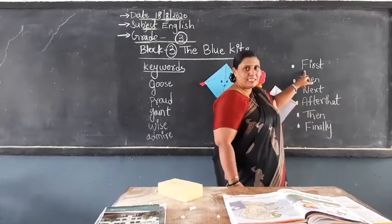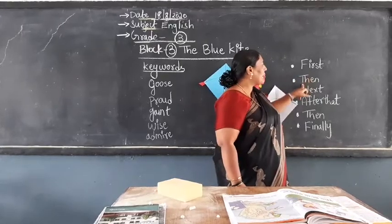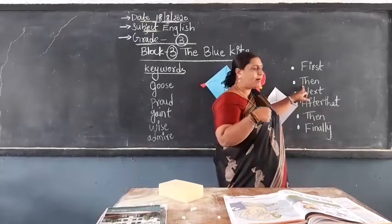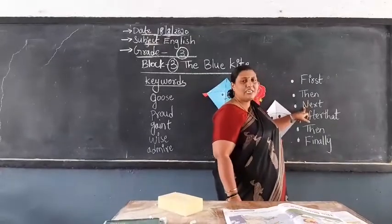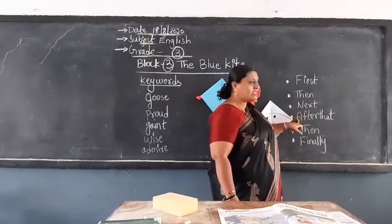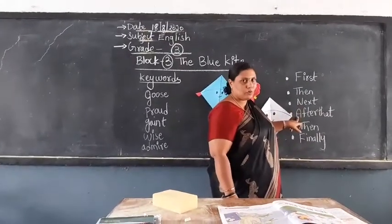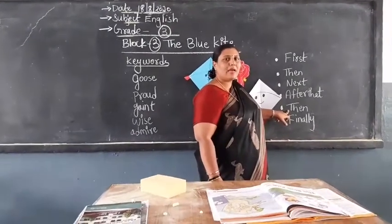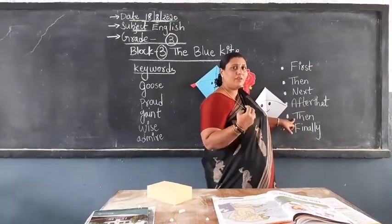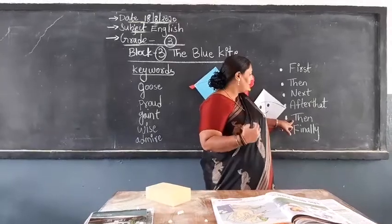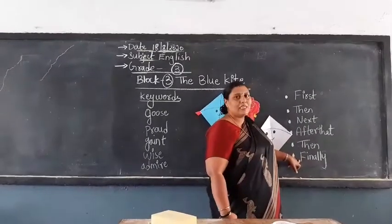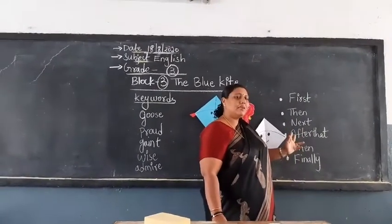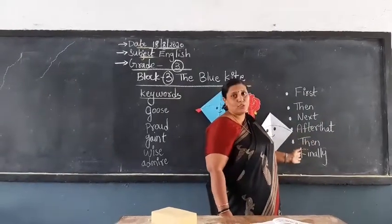First, Gita wakes up in the morning at 7 o'clock. Then she brushes her teeth and takes her bath. Next she gets ready for school. After that she goes to school. Then she comes home and eats her tiffin. Finally she does her homework and goes to bed at 9:00. In this sequence you should tell.